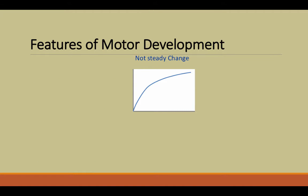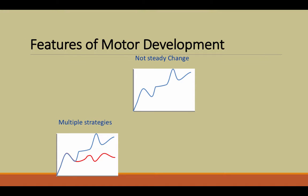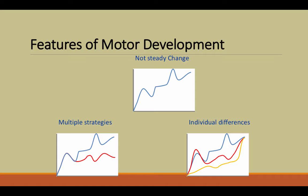Coming back to motor development, one important thing to know is that change is not steady. There will be periods of a lot of change in motor behavior, and then periods where change does not occur as much. There are also multiple strategies that exist to accomplish a movement goal. For example, a child learning to walk may progress from sitting to crawling to walking, while another child could skip the crawling stage entirely but still reach the walking stage. This use of multiple strategies accounts for the individual differences in motor development.